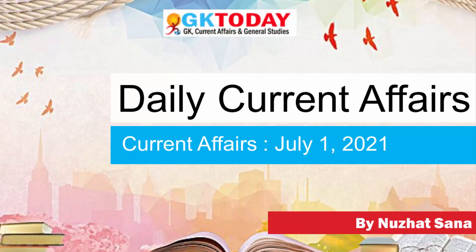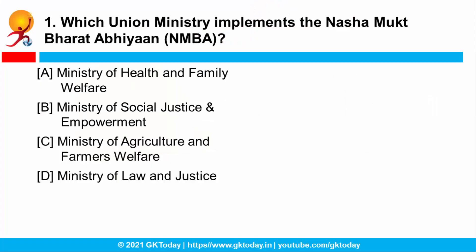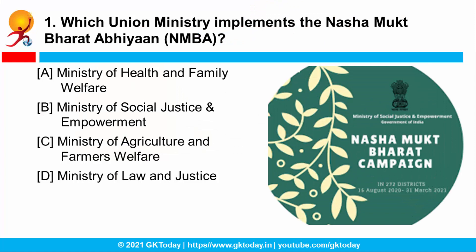Today we will be discussing the most important MCQs for 1st of July 2021. Starting with the very first question: which union ministry implements the Nasha Mukt Bharat Abhiyan? This is implemented by the Ministry of Social Justice and Empowerment. Recently, the Union Social Justice Minister launched the website for Nasha Mukt Bharat Abhiyan, and it is also the Nodal Ministry for Drug Demand Reduction in India.